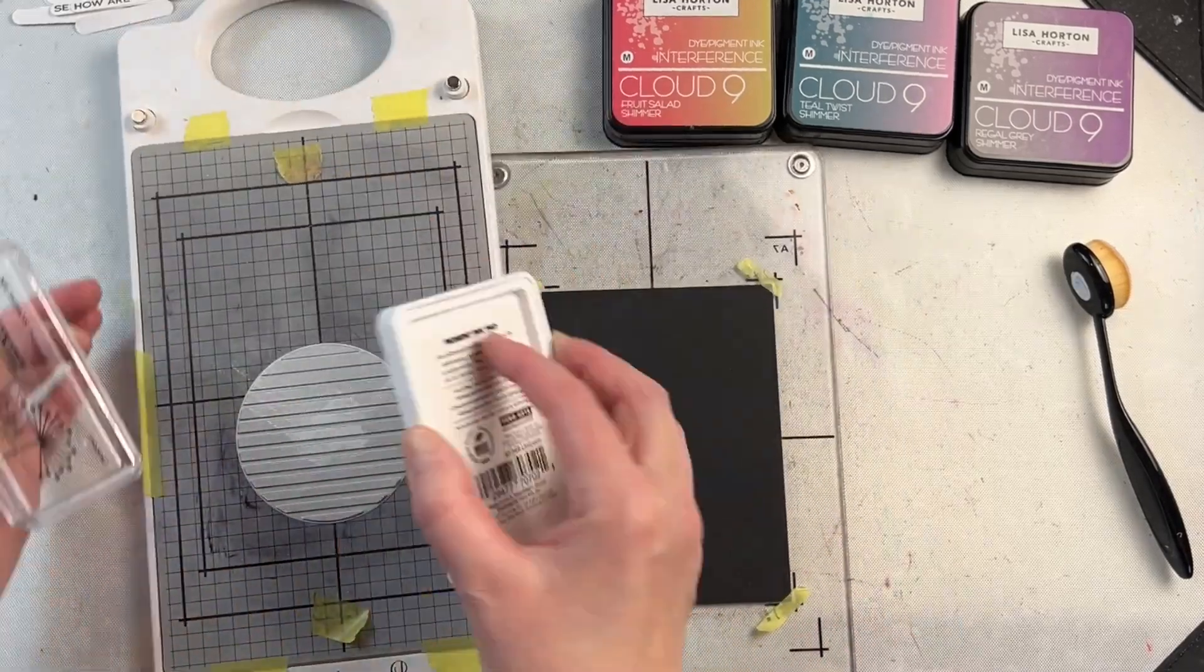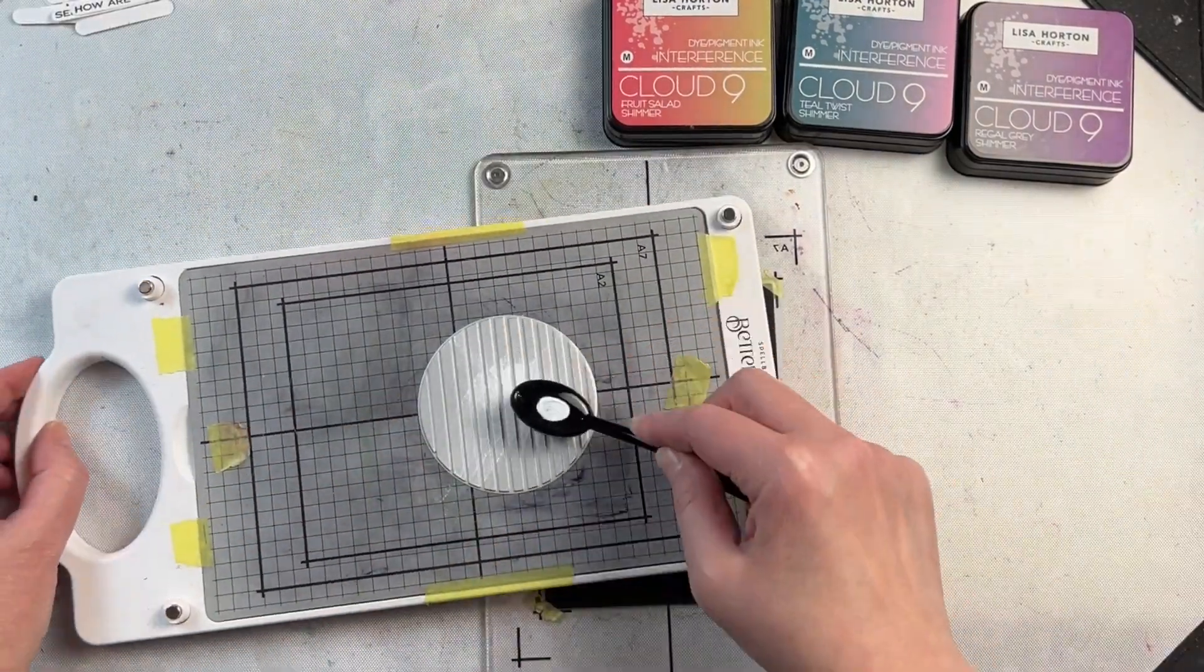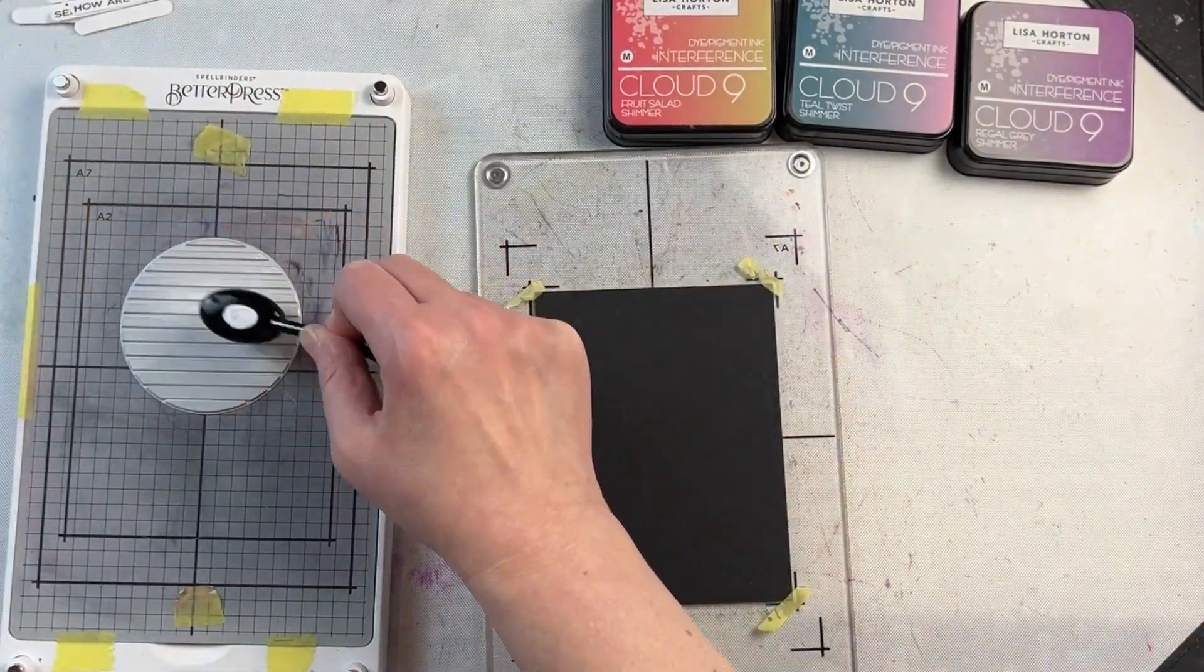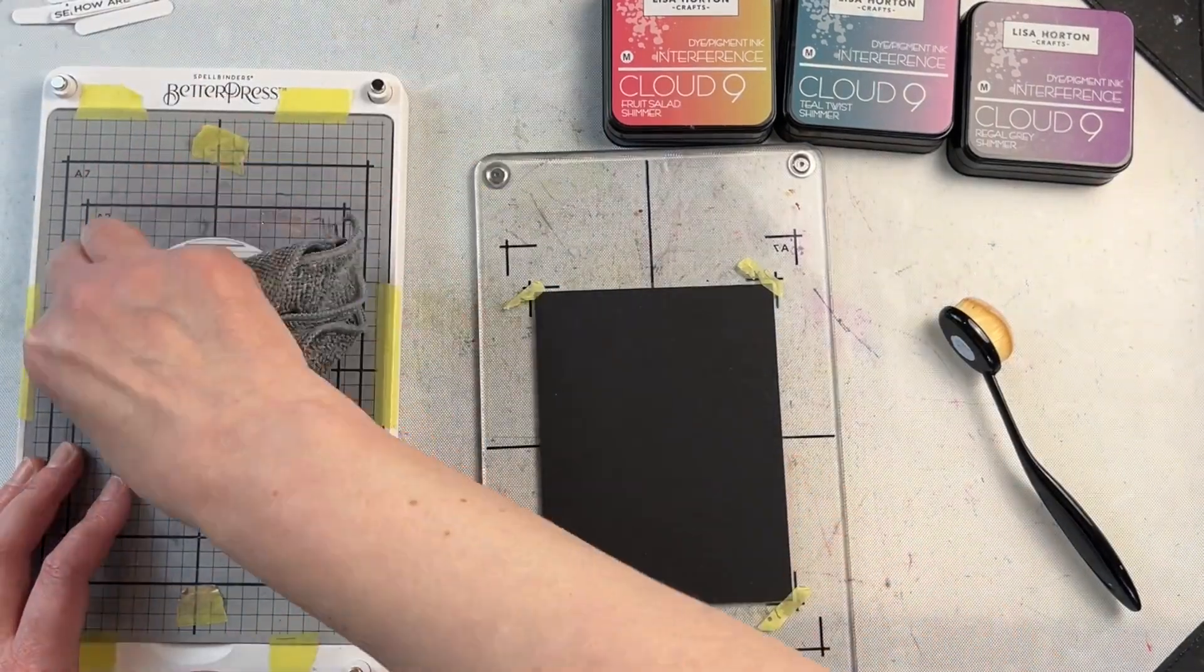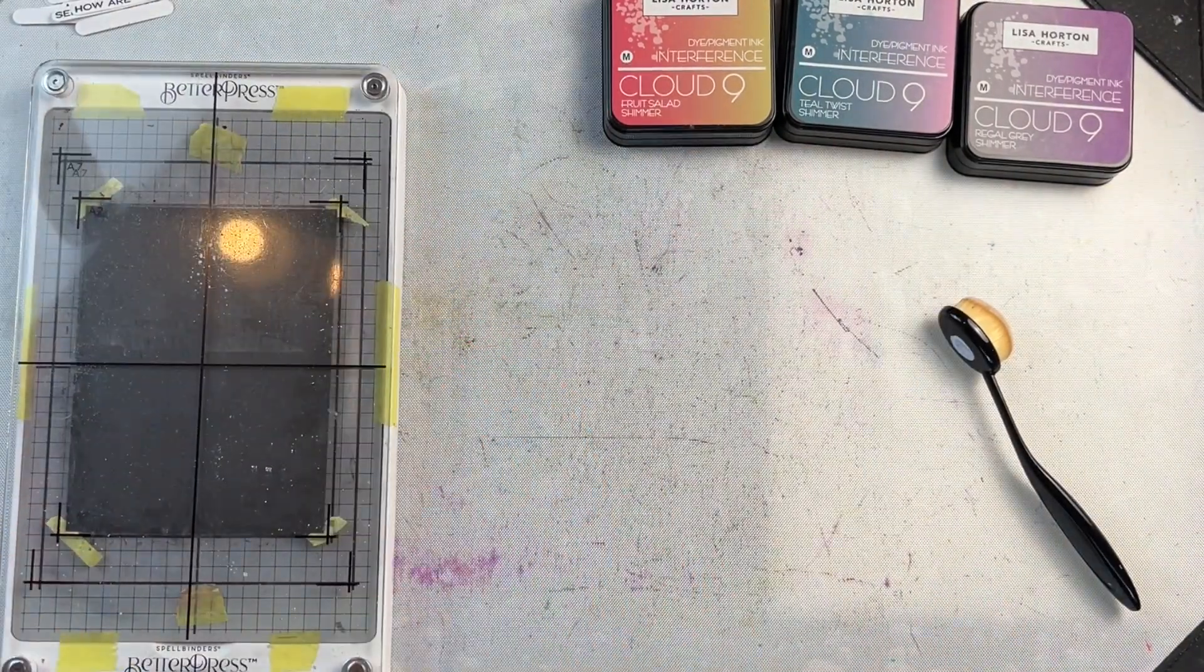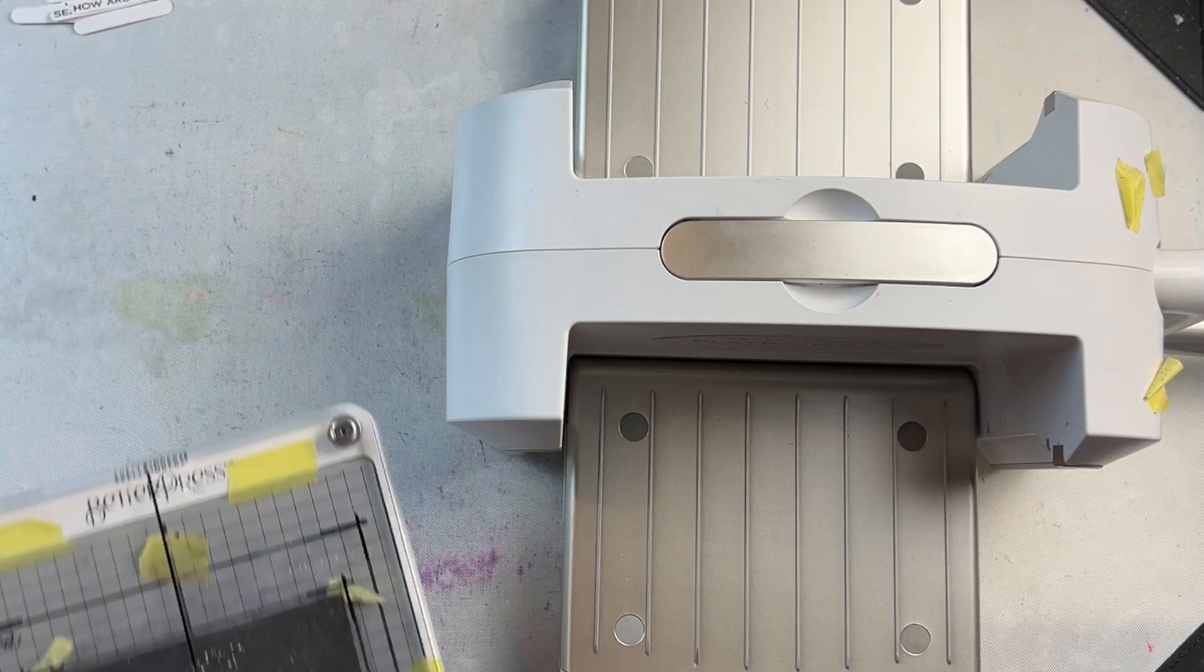For the card I was creating here, I used white pigment ink on the inside part of the press plate and smoothed it out with a blending brush to avoid harsh lines, then put it through my Spellbinders Platinum 6 machine.